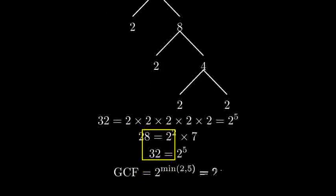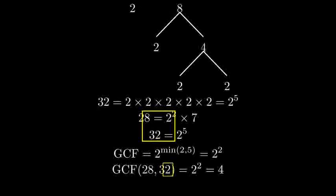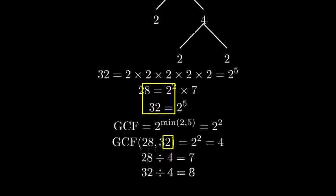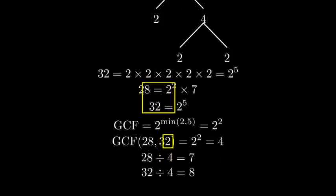In 28, 2 appears to the second power. While in 32, it appears to the 5th power. We take the lower power, which is 2. Therefore, the greatest common factor of 28 and 32 is 2 squared, which equals 4. We can verify this is correct because 4 divides evenly into both 28 and 32.